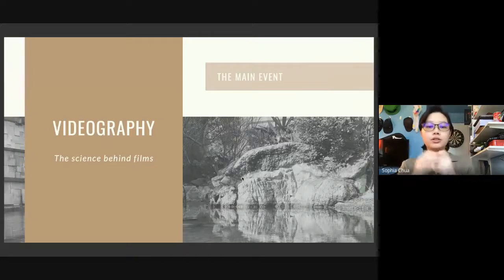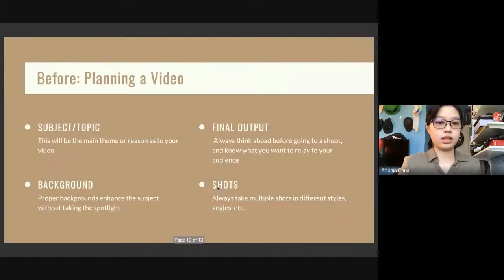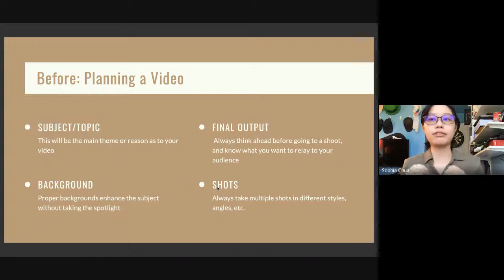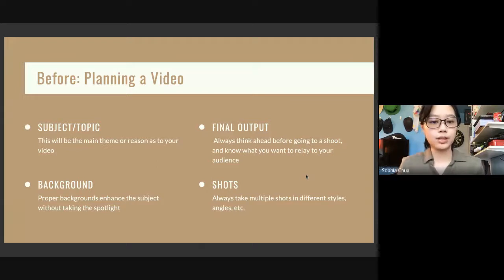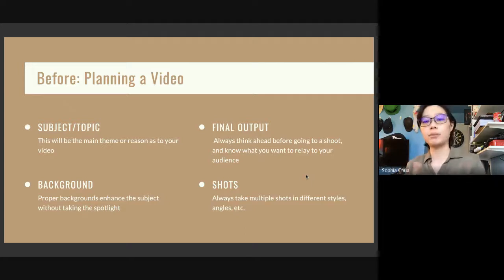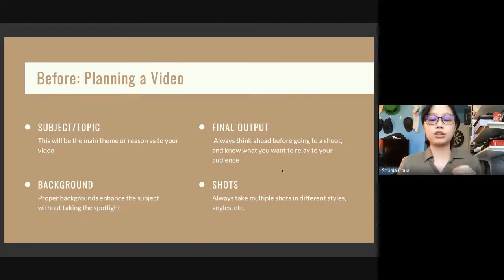Now on to the main event — the science behind films. I'll be discussing three things: before, during, and after a video. Before is a very important key — always plan how a video will turn out. The four main things I always think about are the subject, the background, the final output, and the shots. For the subject, this will be the main theme or reason for your video. If you're shooting a condominium, think about the location, pricing, amenities, types of units, and pros and cons. I suggest listing these down prior so you won't get confused while shooting.